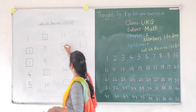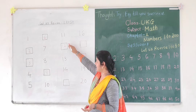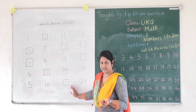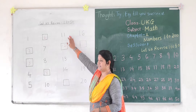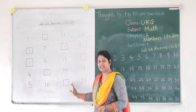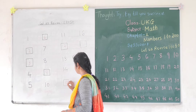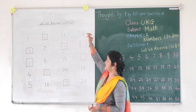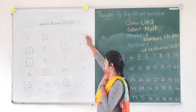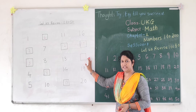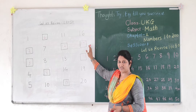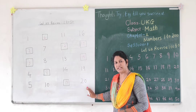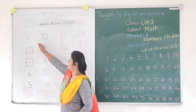11. After 11, which number will come? 12. 11, 12, 13, 14. After 14, which number will come? 15. 11, 12, 13, 14, 15. 16. After 16, which number will come? 17. 16, 17, 18. Very good. 18, 19, 20.